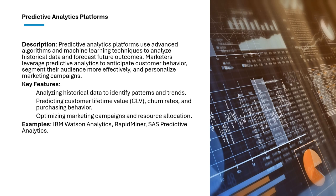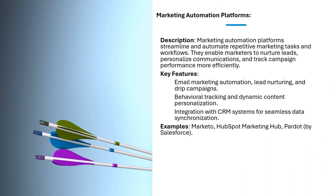Companies offering predictive analytics platforms include IBM Watson Analytics, RapidMiner, and SAS. Then comes marketing automation, which streamlines and automates repetitive or redundant marketing tasks and workflows. It helps marketers nurture leads, personalize communications, and track campaign performance more effectively. Features include email marketing automation, lead nurturing or drip campaigns, behavioral tracking, dynamic content personalization, and CRM integration for seamless data synchronization. Providers include Marketo, HubSpot Marketing Hub, and Pardot by Salesforce.